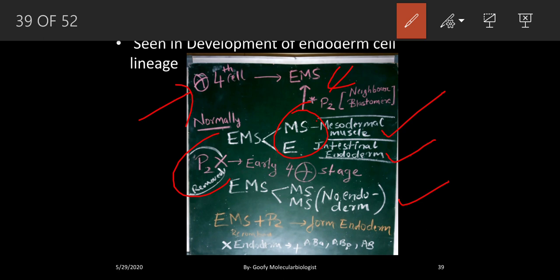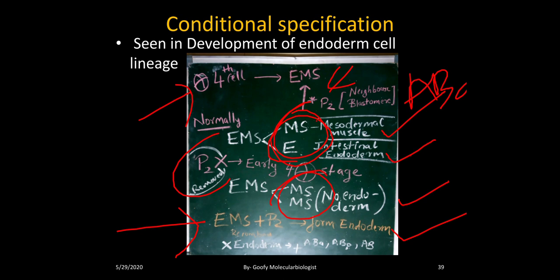In further experiments, they recombined the EMS cell with the P2 cell and observed the formation of endoderm. They also tried recombining with the ABA and ABP cells but found nothing was formed. This showed that only if the EMS cell receives a signal from its sister P2 cell will it divide properly to give both cell types. This is referred to as conditional specification.